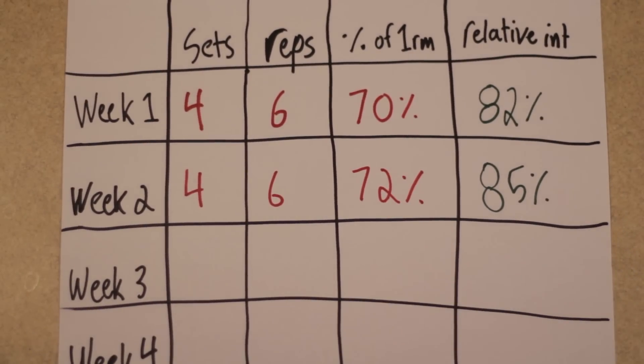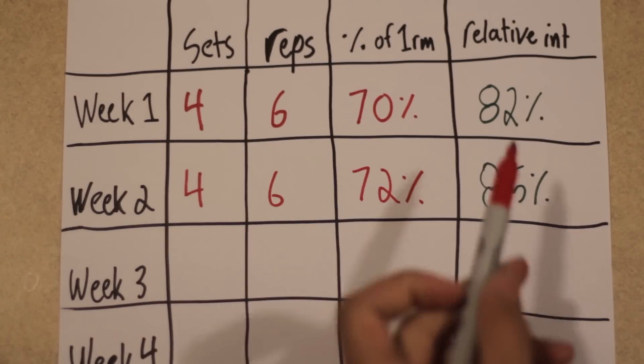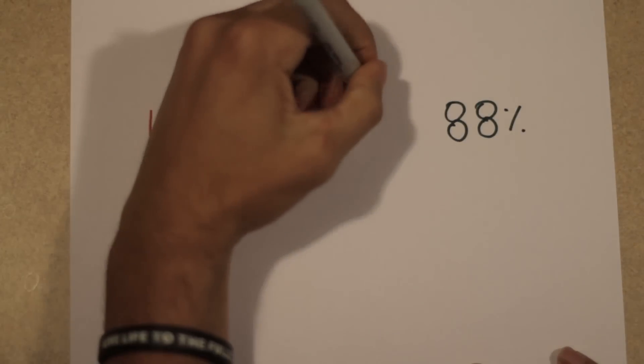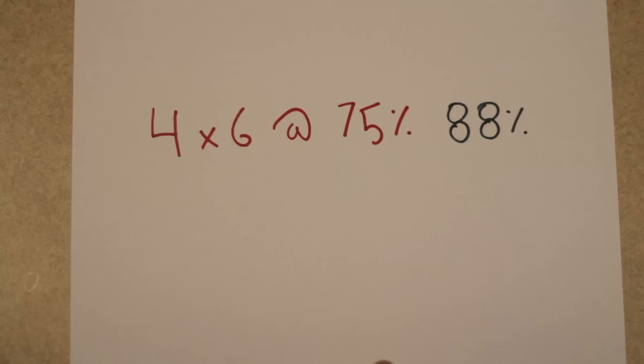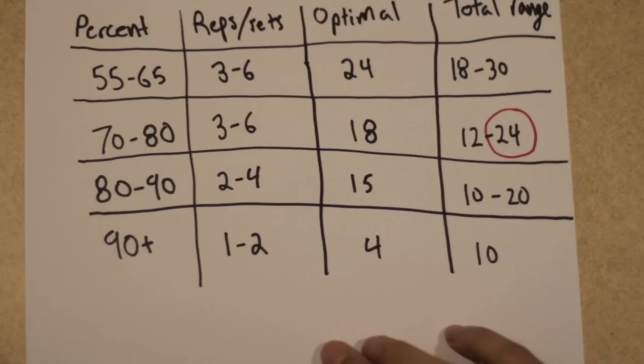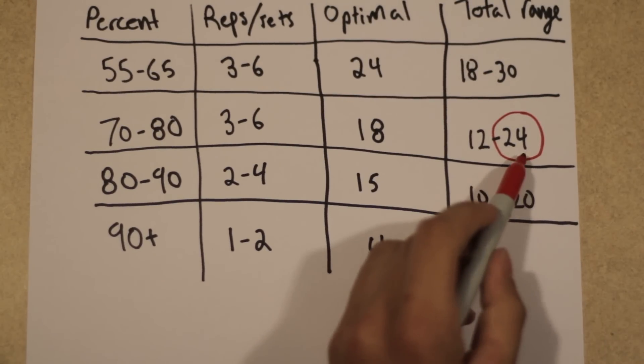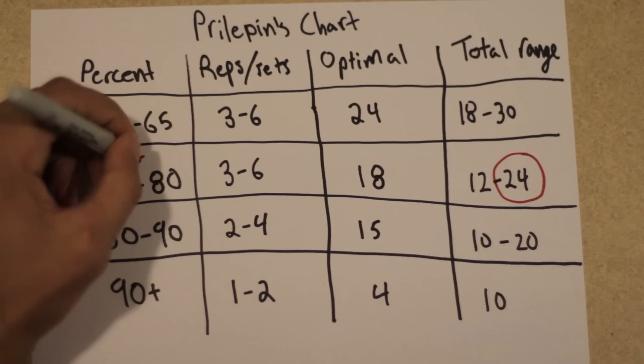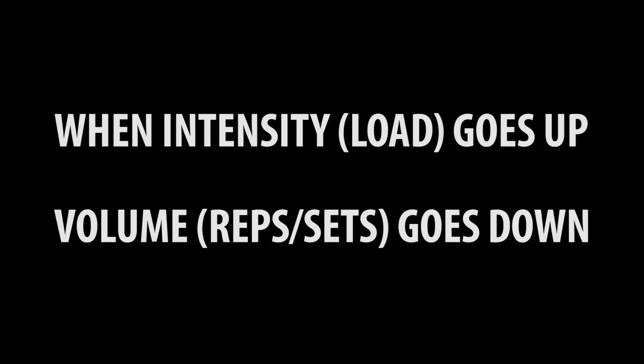So far we have 4x6 at 70%, which gives us an 82% relative intensity. 4x6 at 72%, which gives us an 85% relative intensity. And we want to go 4x6 at 88% relative intensity. That would give us an actual intensity of 75%. The issue with our projected week 3 is that we are using the maximum number of repetitions on Prilipin's chart for the given intensity. And we aren't on the minimum intensity in that range anymore, like we were on week 1. One key element of overload is that when intensity, in this case load, gets heavier, volume must go down. So let's go with 4x5.